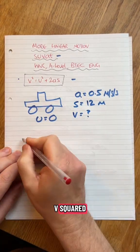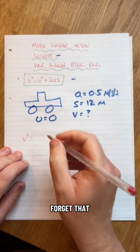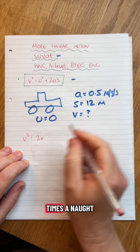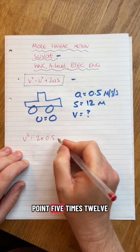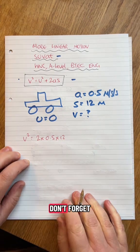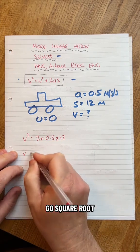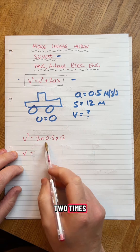V² = u². Well, u is zero so I can forget that, so it's 2 times a, 0.5 times 12. Don't forget, square root all of this. 2 times 0.5 that's 1, that's 12.